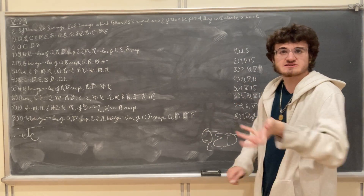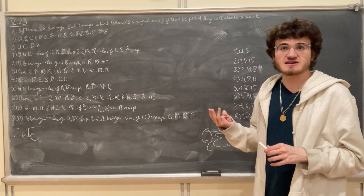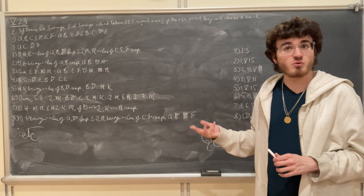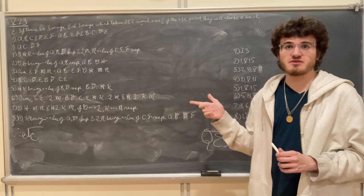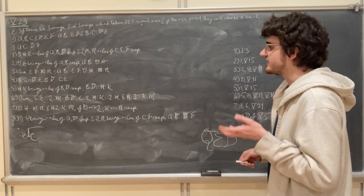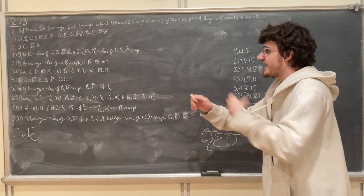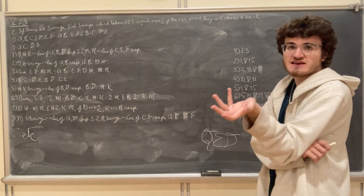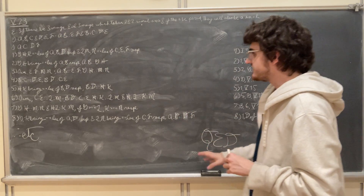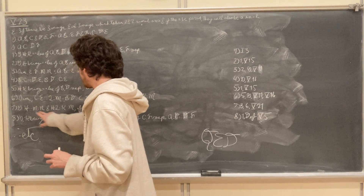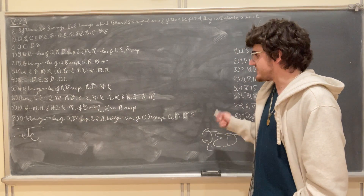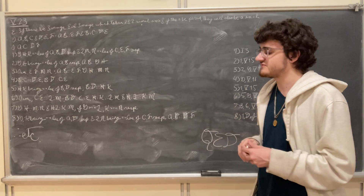We have the conditions necessary to satisfy Proposition 5.21: if you have three magnitudes and another three magnitudes which, taken two and two together, are proportional, and if this proportion be perturbed, then if the first is greater than the third, the fourth will be greater than the sixth; if equal, equal; and if less, less. Here we have three magnitudes G, H, and K and another three magnitudes L, M, and N, with a perturbed proportion. So if G is greater than L, K will be greater than N; if equal, equal; and if less, less — this is Proposition 5.21.